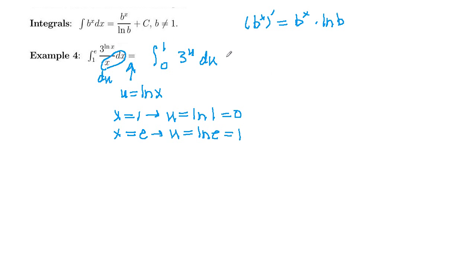So integral 0 to 1, 3 to the u du. So if we integrate 3 to the u, what do we get? Well, we get 3 to the u, and then divide by log of the base, ln of 3. And then we are going to evaluate that from 0 to 1.